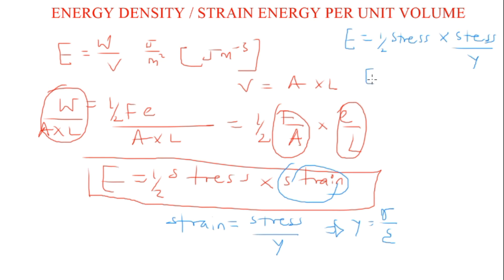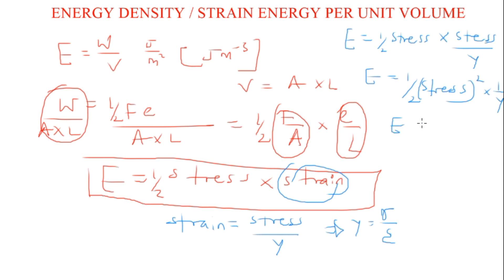In other words, the energy density equals half of the square of the stress, multiplied by one over Young's modulus. This means the energy density is proportional to the square of the stress.